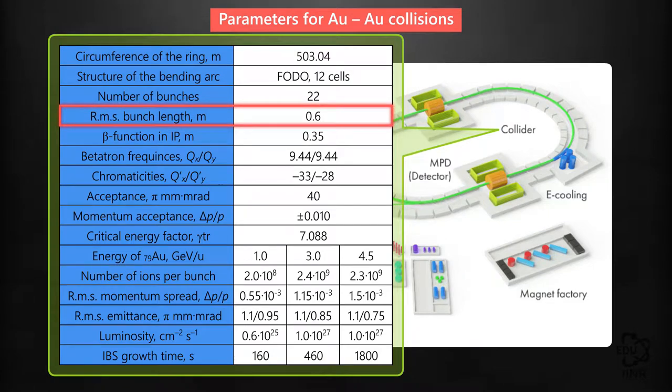The bunch length at the collider is set to be 60 centimeters due to the requirements of the regular distribution of luminosity in the interaction area. The maximum acceptable bunch number is limited by the capabilities of parasitic collisions in the detector, and the bunch number amounts to 22.